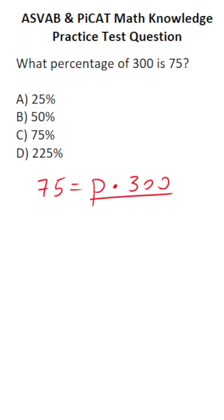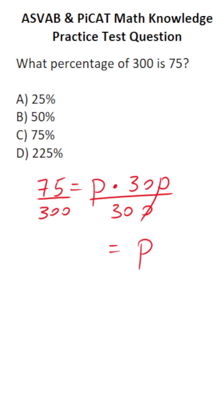To solve this one, we're just going to divide both sides by 300. The 300 on the right side cancels out, leaving P on that side. Let me rewrite this so it's nice and easy to see.